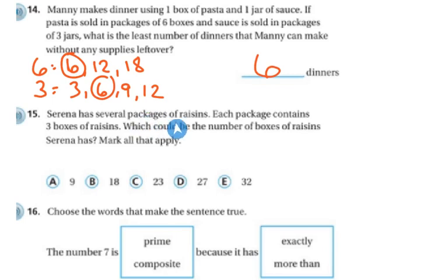Serena has several packages of raisins. Each package contains 3 boxes of raisins. Which could be the number of boxes of raisins that Serena has? Mark all that apply. Again, I'm looking at my multiples. So 3 times 3 is 9. 9, so 9 could be an option, 18 could be an option, and 27 could be an option. 23 and 32 are not multiples of 3, so those would not work.